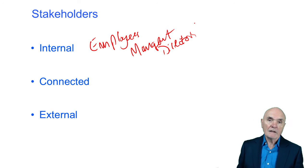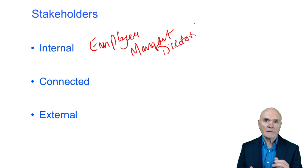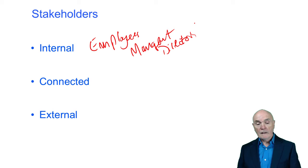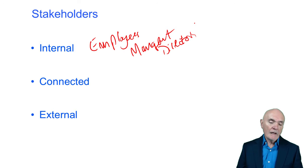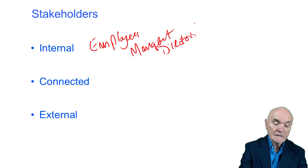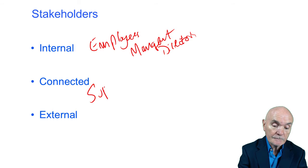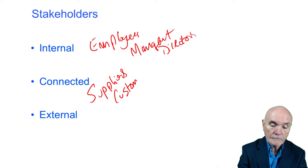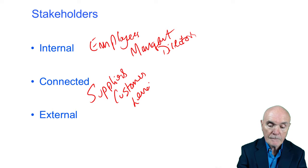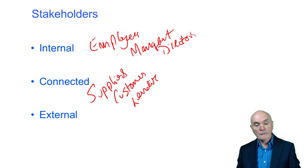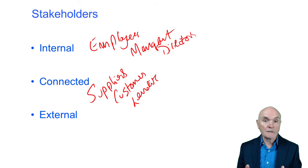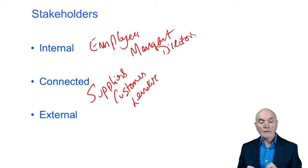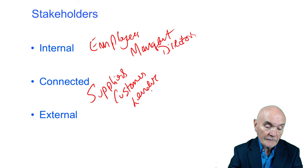Connected stakeholders have some sort of contractual relationship with the organisation but are not permanently inside or permanently involved with it. Examples of connected stakeholders can be suppliers, customers, the bank, and lenders. They're not involved day to day but have an ongoing relationship evidenced through contract. Usually within connected are shareholders.